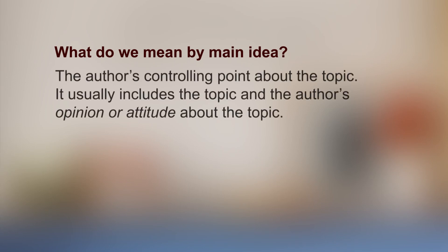Let us now look at topics and main ideas in paragraphs. We begin with paragraphs first, so that by learning to identify them, we can move on to longer pieces of writing. In order to understand the meaning of a paragraph, one must identify the topic and the main idea. Finding the main idea in a paragraph is not easy, but it is a crucial skill to become an effective reader. When we are capable in this aspect, we will accomplish much in an academic setting. So what do we mean by a main idea? The main idea is the author's controlling point about the topic. It usually includes the topic and the author's opinion or attitude about the topic.